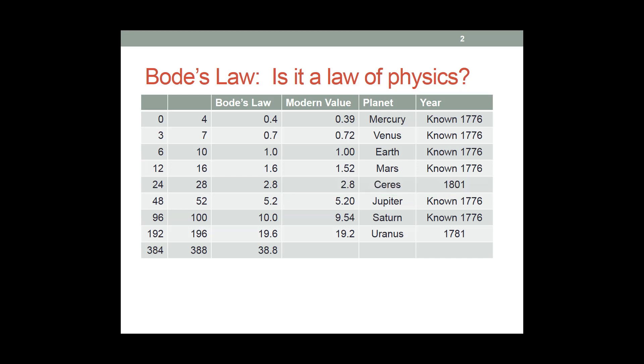They then went and they found Ceres. Ceres is exactly at 2.8 astronomical units. It was discovered in 1801 and it is part of the asteroid belt between Mars and Jupiter, and it's actually a fairly big asteroid.